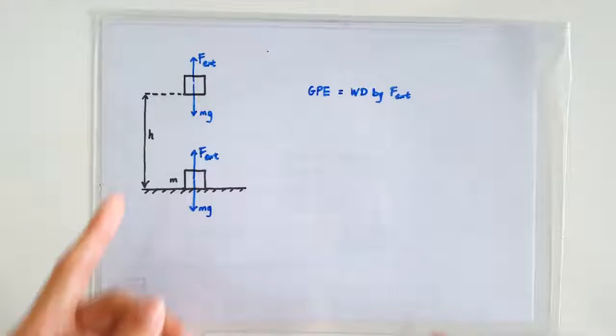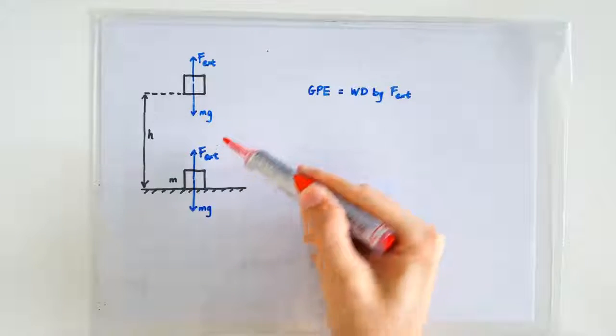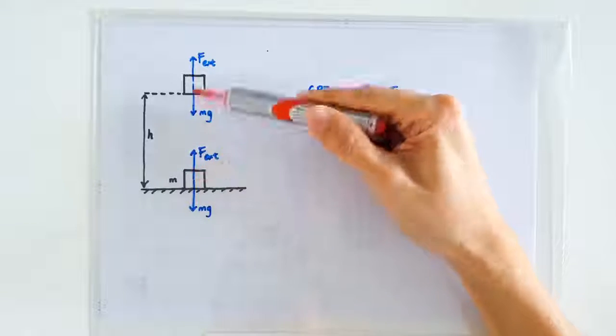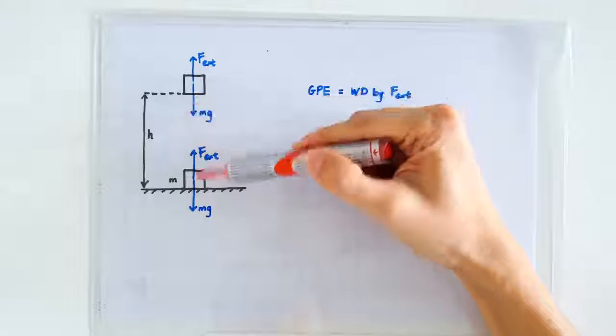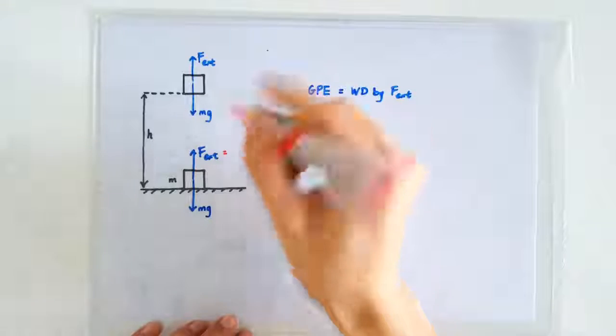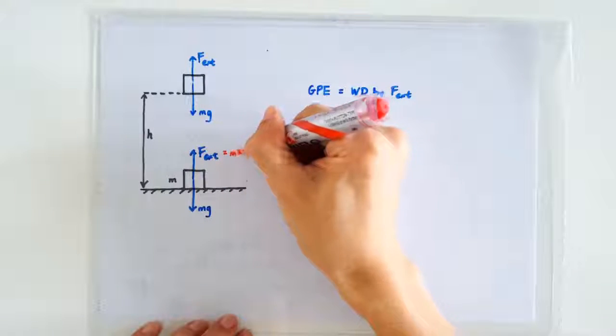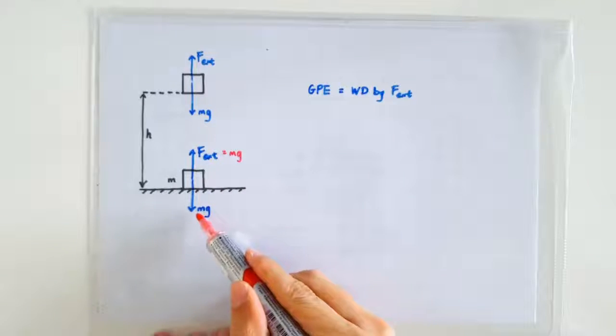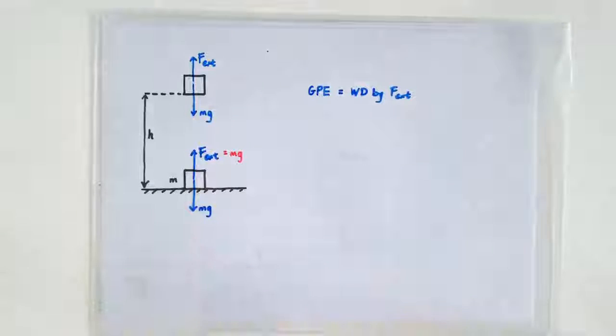It's crucial that this external force changes only the vertical height of the mass and not its speed. And the easiest way to ensure that is to imagine that this external force is always just matching the gravitational pull of the mass.